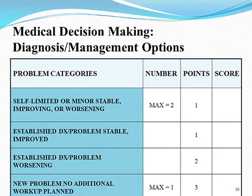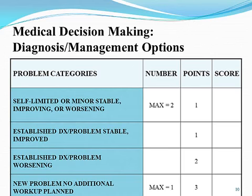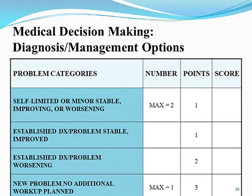We don't tend to use the self-limited or minor category often. The CMS table of risk provides examples like a cold or an insect bite. The maximum for that category is two — if you have three, you still only get credit for two. Established diagnosis problem stable or improved is one point each. Established diagnosis problem worsening is two points. New problem with no additional workup plan is worth three points, with a maximum of one — so if you have more than one, you still only get credit for one.